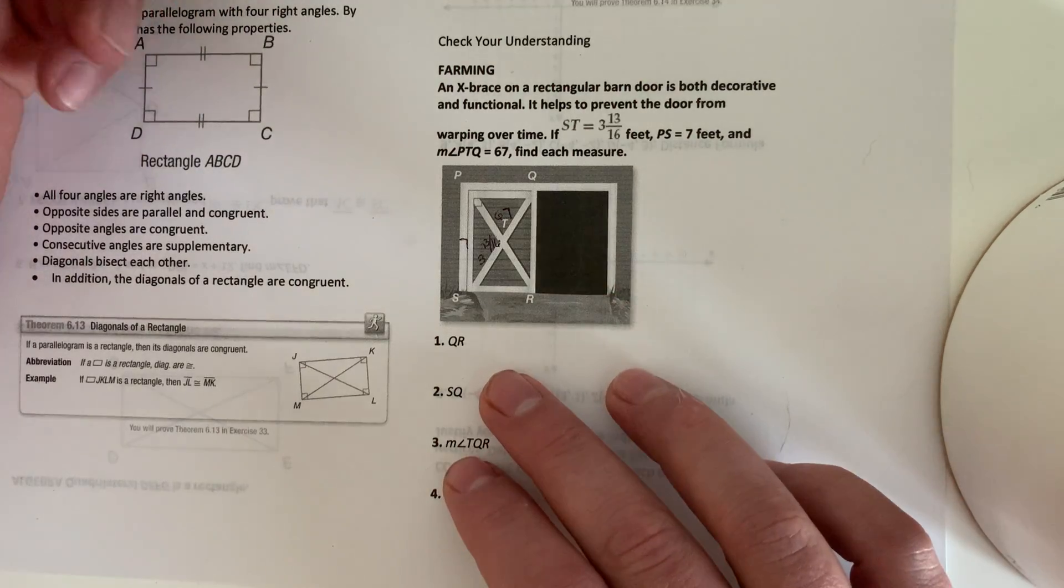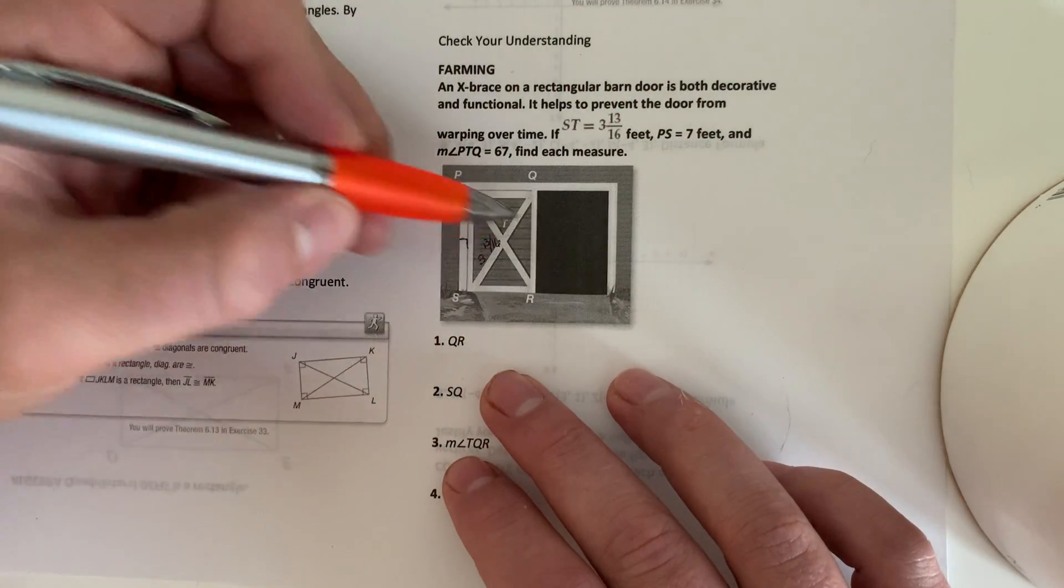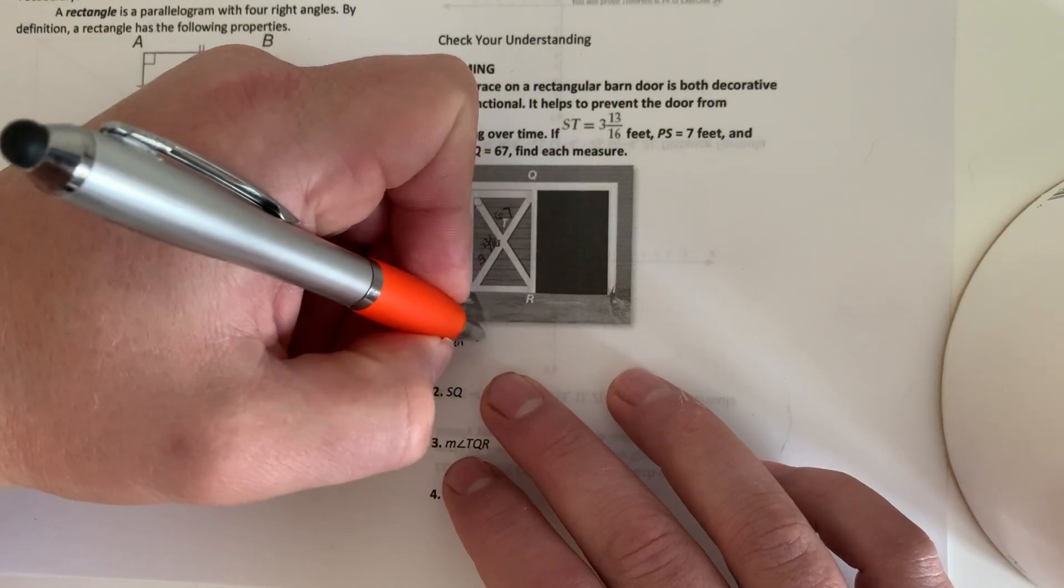Alright, so QR is this side. We know for rectangles, opposite sides are congruent. So QR will equal 7 as well.